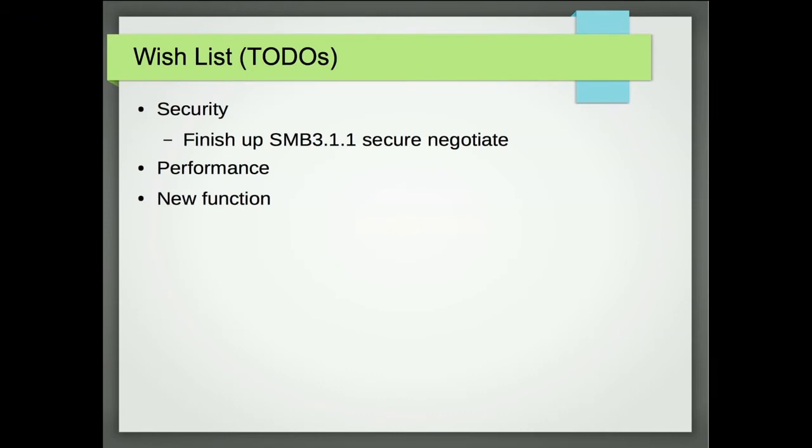The to-do list: we have some security things, finishing up 3.1.1, secure negotiate is a big item. For performance, especially compounding — the Mac client compounds constantly, compounding a lot. We have a Wireshark trace showing this. It's important to do that, and we're partway along on it.